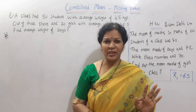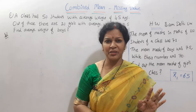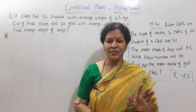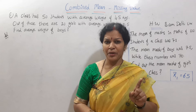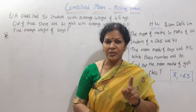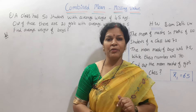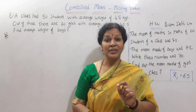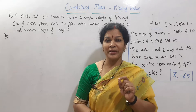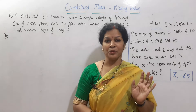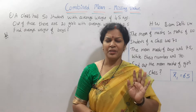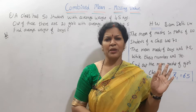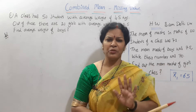Combined mean is equal to n1 x̄₁ plus n2 x̄₂ divided by n1 plus n2. The formula is not the same as other formulas.